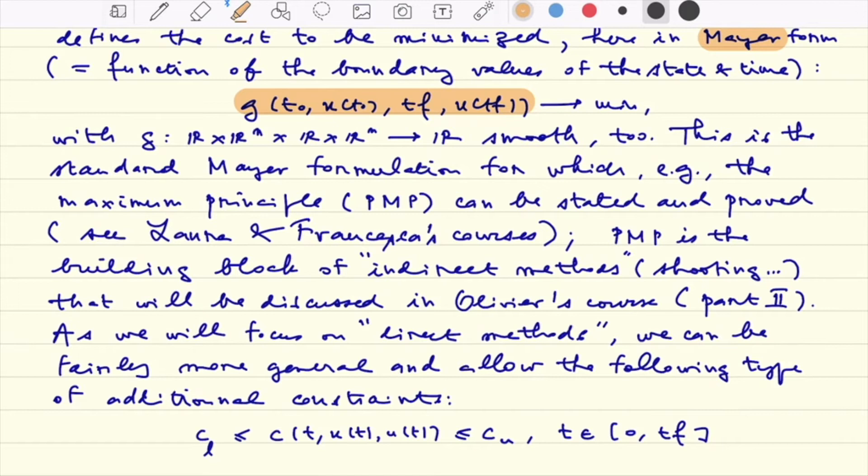It is always possible to go from Lagrange formulation to the Mayer one. This is G the function, smooth again, which defines the final cost, the Mayer cost. For such a problem we can state the maximum principle. This has been done in the courses by Laura or Francesca. The maximum principle is the building block of the so-called indirect methods, that is shooting methods that Olivier will tell you about in part two. We will focus on the direct method, that is we will transform our control problem into an optimization problem in finite dimension.